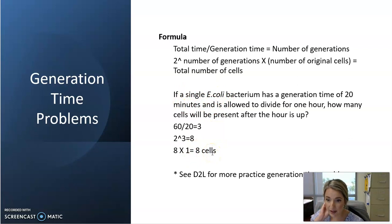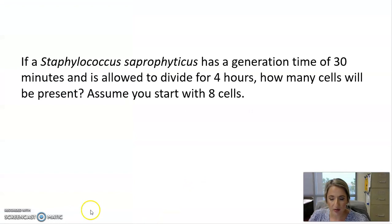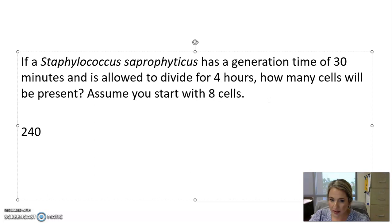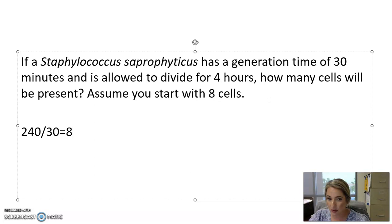Let's look at another problem. If Staphylococcus saprophyticus has a generation time of 30 minutes and is allowed to grow for four hours starting with eight cells, how many cells will be present? We take the total time — four hours — and convert it to 240 minutes, then divide by the generation time of 30 minutes. 240 divided by 30 gives us eight, meaning it can go through eight binary fission cycles in four hours.